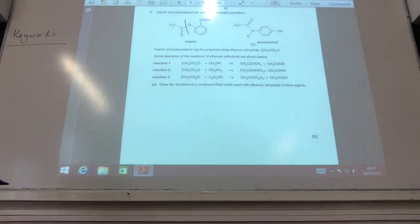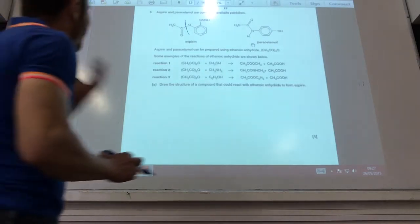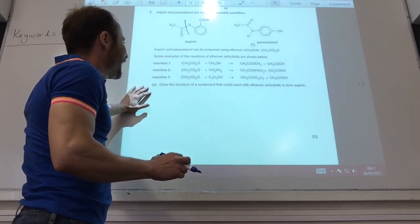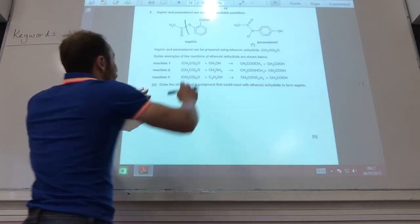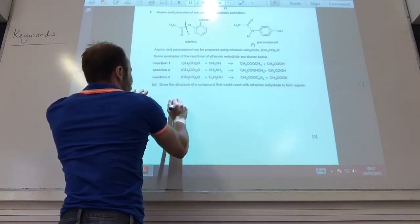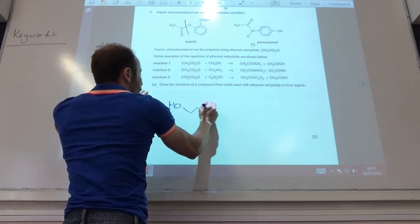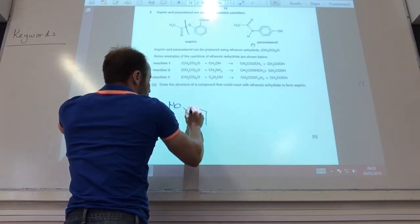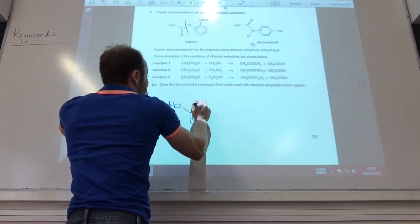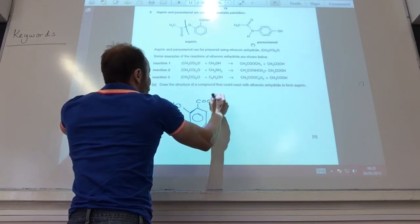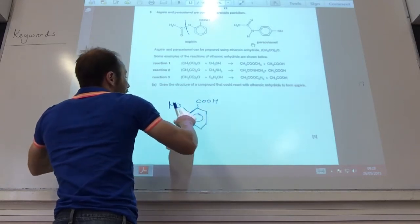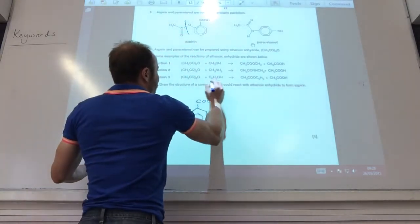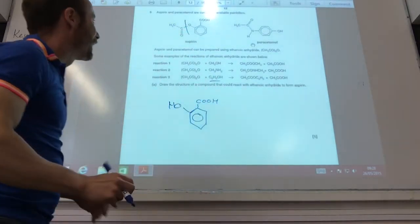Oh right, okay, so they give me the structures of aspirin and paracetamol up here. And they want me to draw the structure of the compound that reacts with ethanoanhydride to form aspirin. That's your ester bond there. So the compound is going to be that one. Because it would be that phenol group that would react with ethanoanhydride as it does here, to give me aspirin.